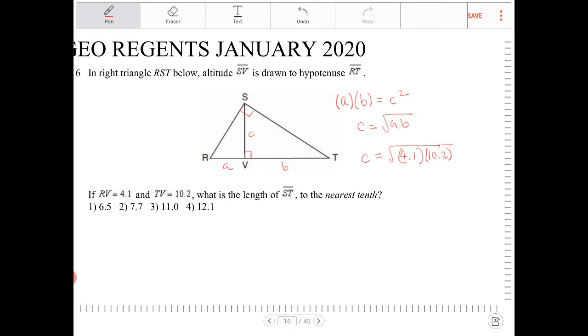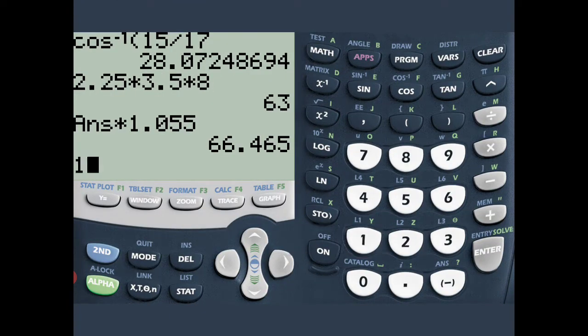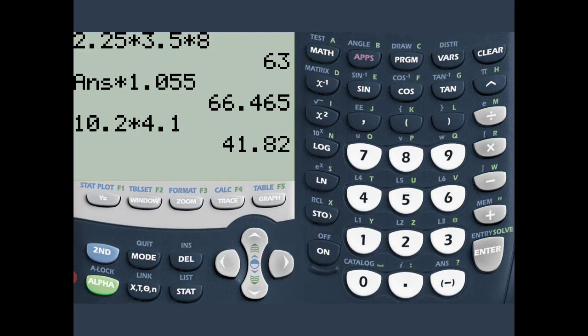And actually, you know what? I am not going to figure out what C is, but instead I'm going to figure out what C squared is. So C squared is equal to 4.1 times 10.2. I'm going to punch that into the calculator. And that's 41.82.